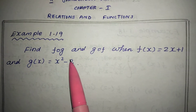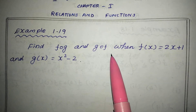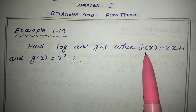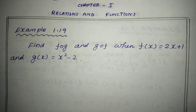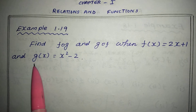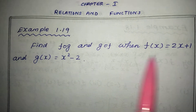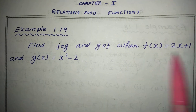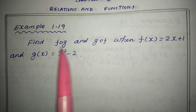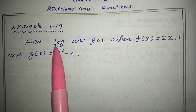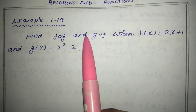Find f of g and g of f, when f of x is equal to 2x plus 1 and g of x is equal to x square minus 2. We have to find f of g and g of f.